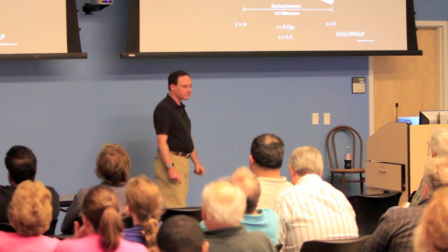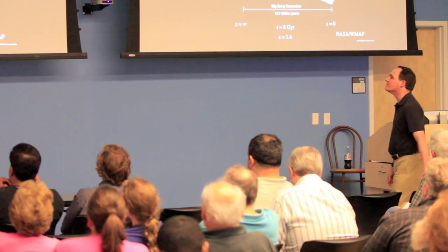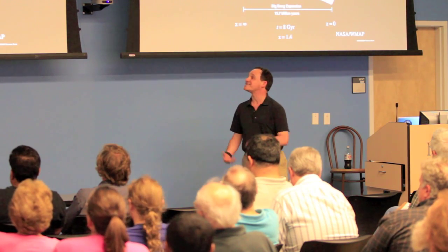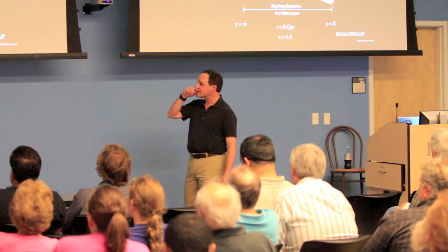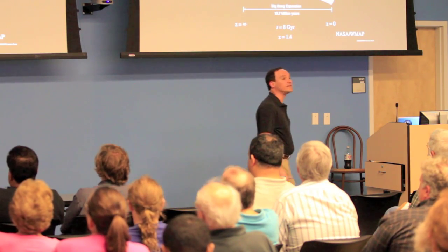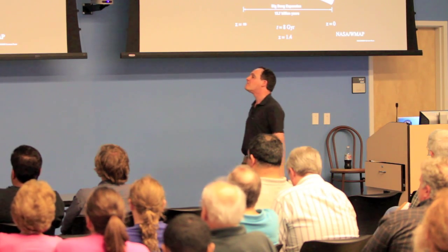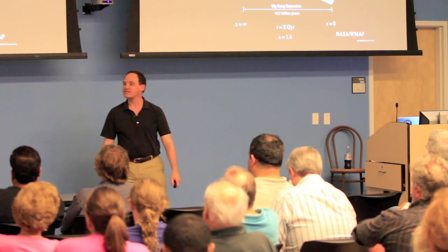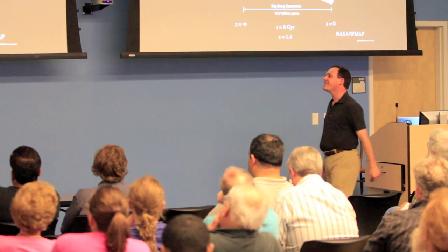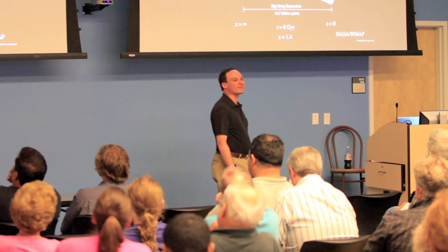Baryons are normal material. Over the history of the universe, we've known something about where they are at different points in time. Here's a brief schematic of the history of the universe according to NASA's WMAP satellite, with the present day on the right and the Big Bang on the left. I'm going to spend most of this talk discussing things as a function of what we call redshift. Redshift is sort of an inverse time — if you do one over time, that's roughly a redshift.